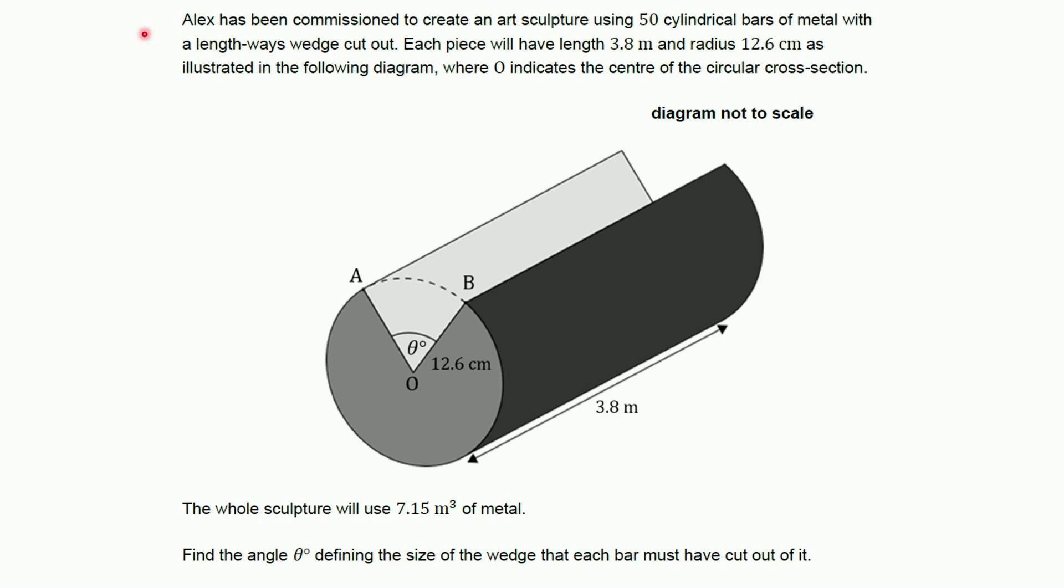Alright, so let's read it carefully. Alex has been commissioned to create an art sculpture using 50 cylindrical bars of metal with a lengthways wedge cut out. Now, each piece will have a length of 3.8 meters and a radius of 12.6 centimeters as illustrated in the following diagram where O indicates the center of the circular cross section.